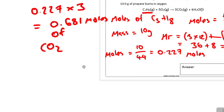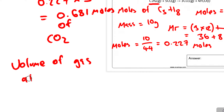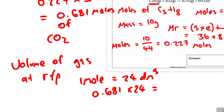Now we can calculate the volume. The volume of a gas at room temperature and pressure — one mole equals 24 dm³. So we do 0.681 × 24, and that gives us our final value: 16.4 dm³.